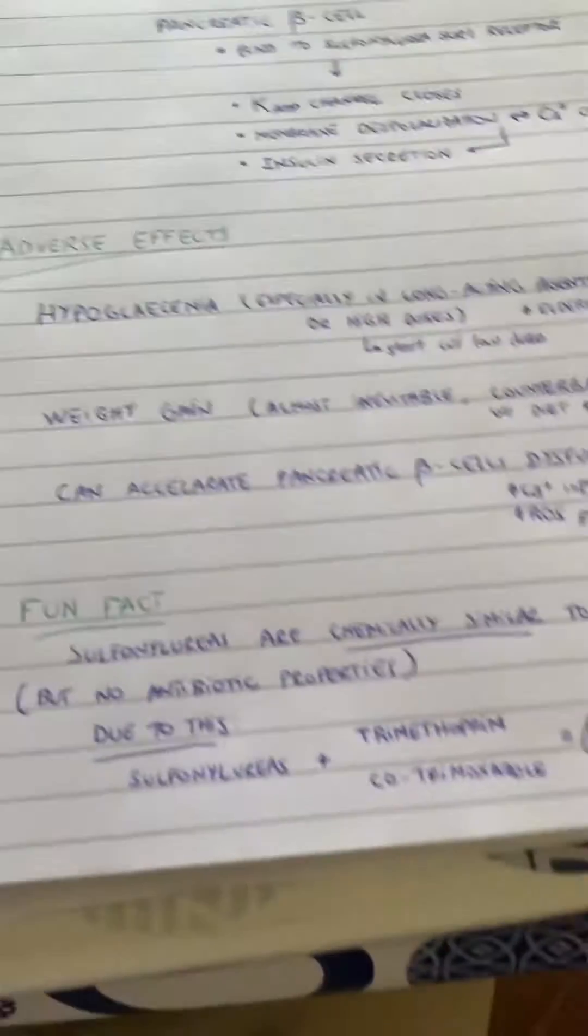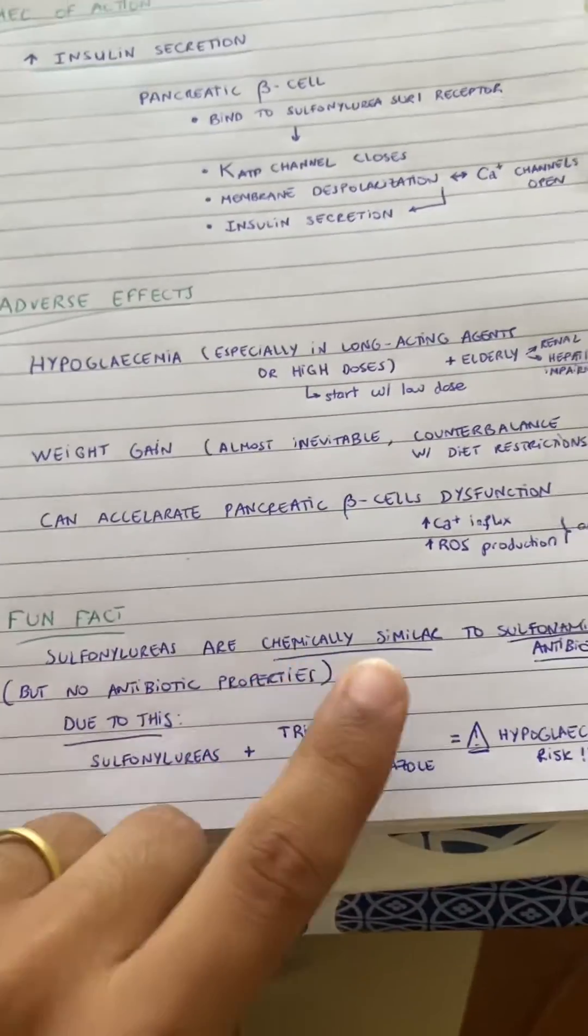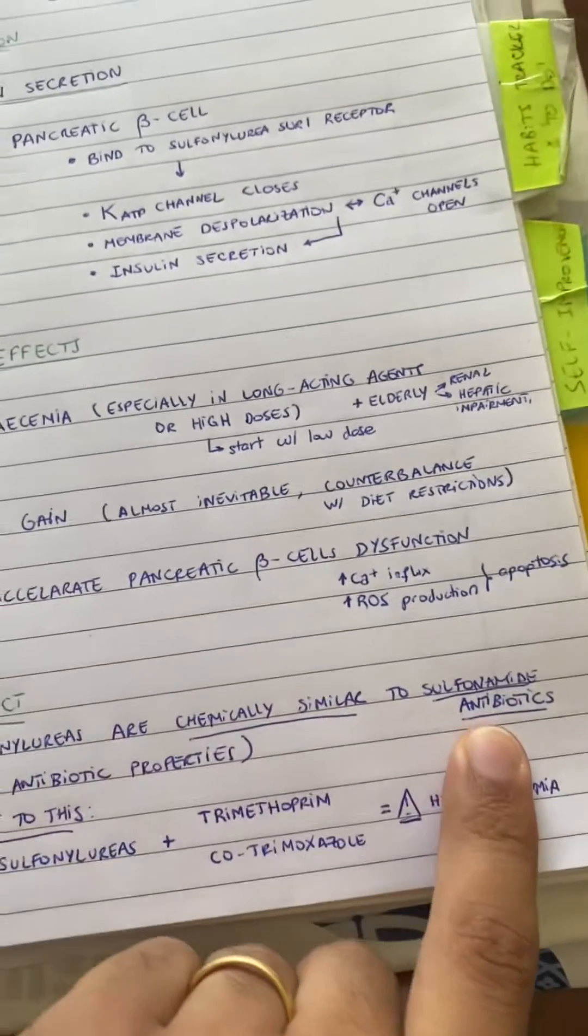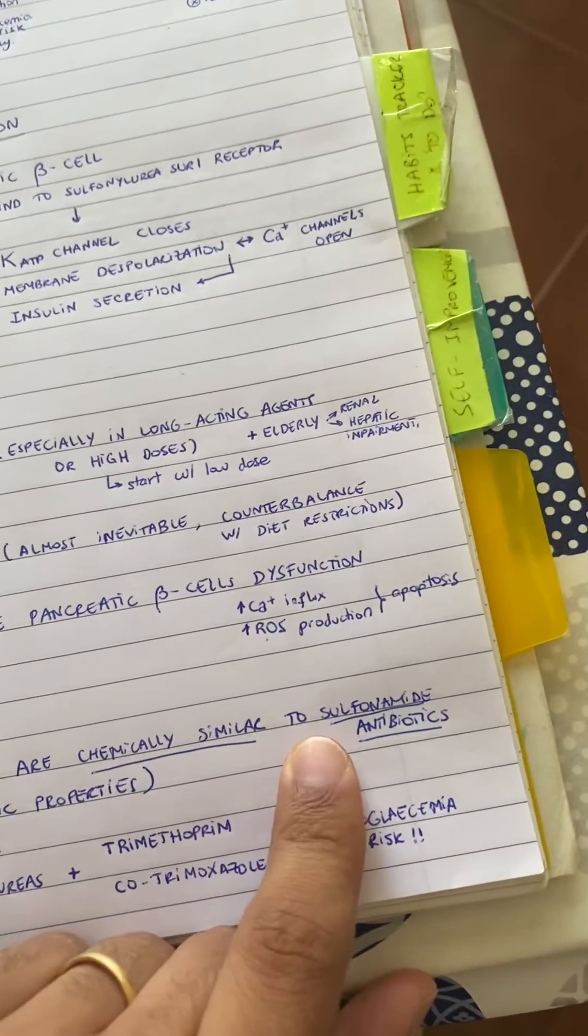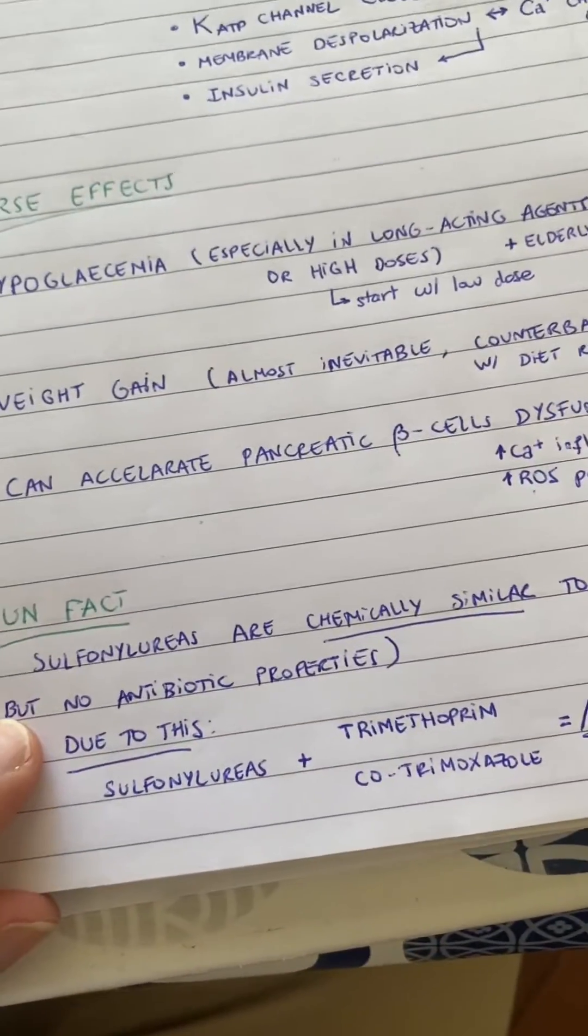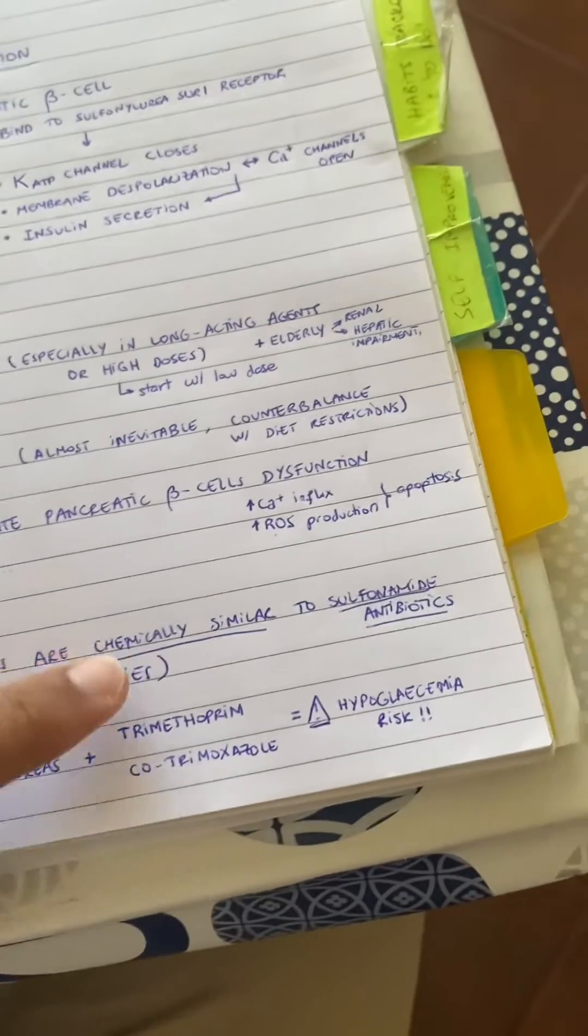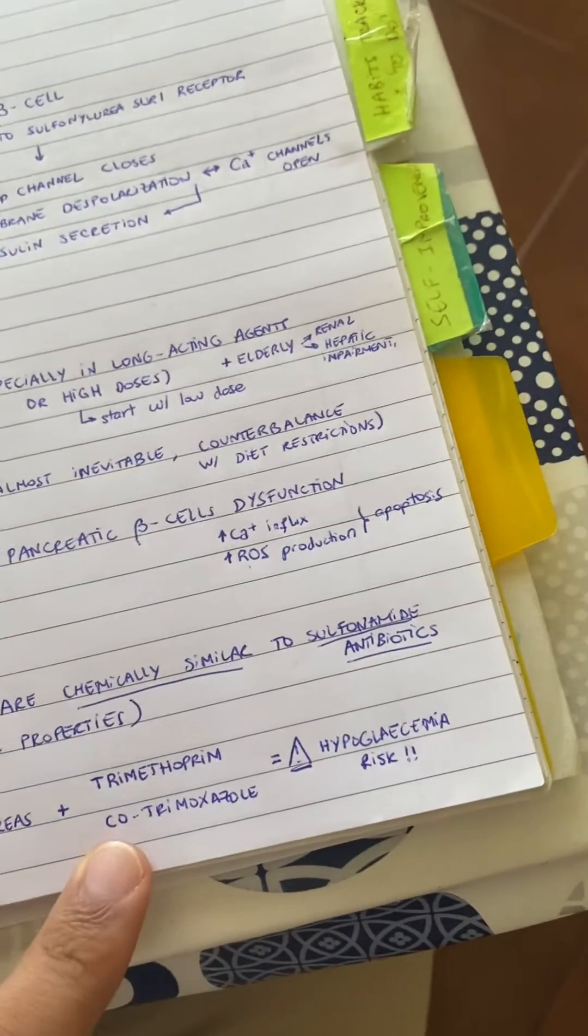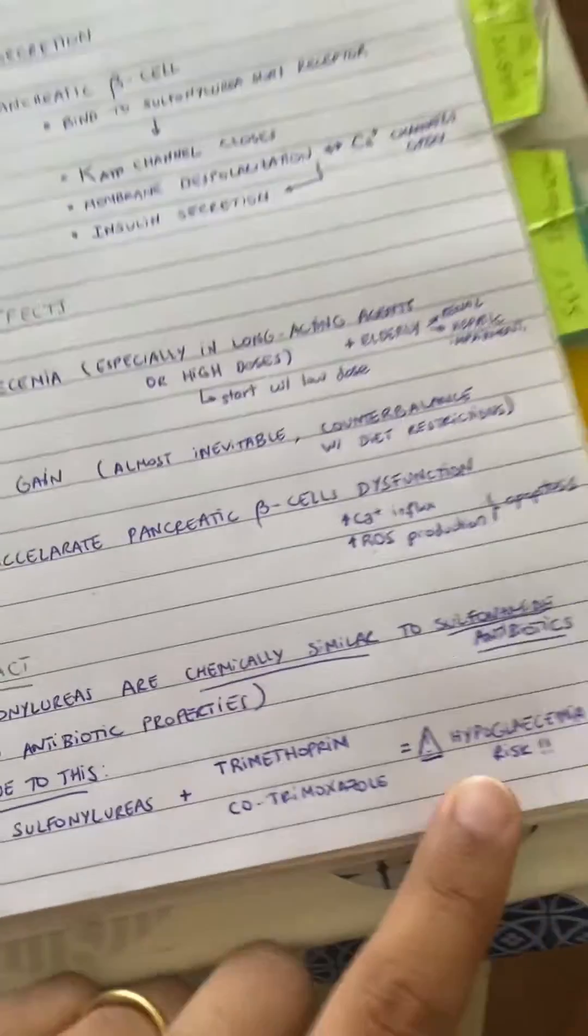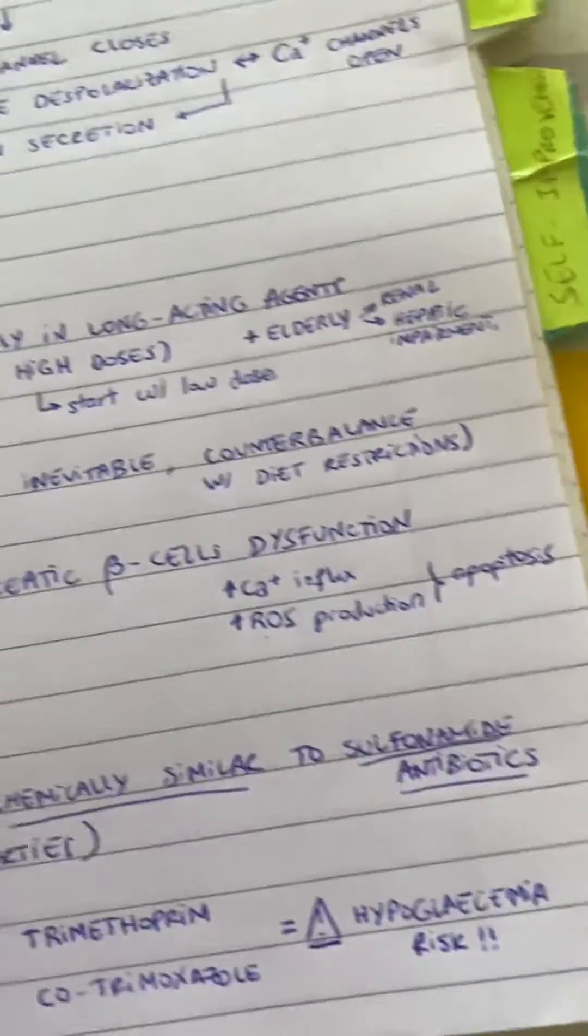And just to wrap up this video, let's see just a fun fact. Sulfonylureas are actually chemically similar to antibiotics, the sulfonamides. They are similar to them, but they don't have any antibiotic properties. But due to this, sulfonylureas combined with trimethoprim or cotrimoxazole can lead to hypoglycemia risk. So this is something to keep in mind.